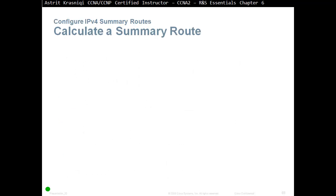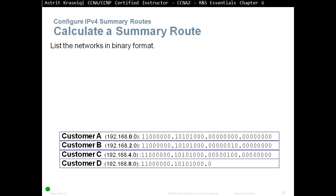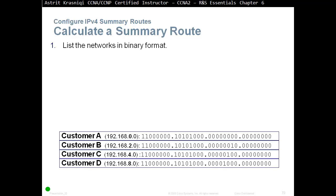So how do we calculate a summary route? We have to list the networks in question in binary format. Imagine we have four networks — A, B, C, and D. We have to convert the decimal addresses into binary. After we convert all networks into binary, a shorter way would be to skip the octets that are actually the same. If you look, 192.168 is the same on all four of them, so you don't have to convert that part into binary. After listing them in binary format, we count the number of far-left matching bits, going from left to right.